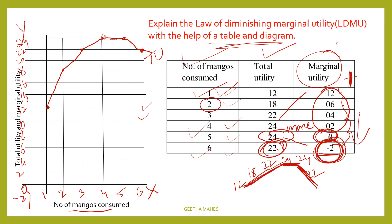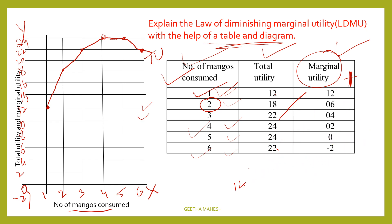Now plot the marginal utility curve. For the first mango, marginal utility is 12. Second mango is 6. Third is 4. Fourth is 2. Fifth is 0. Sixth is minus 2 — mark this below the x-axis. Join all these points to form the marginal utility curve.